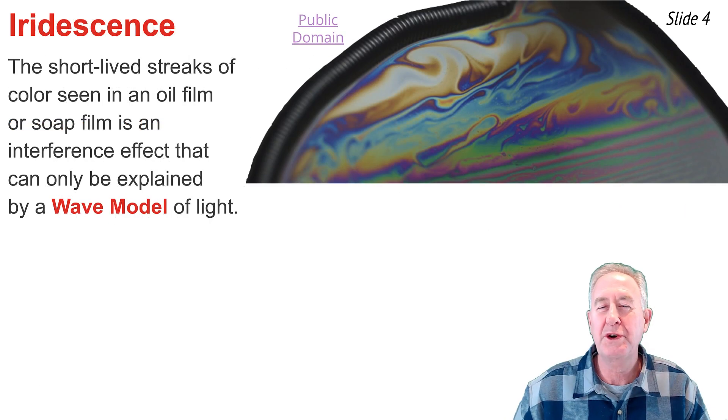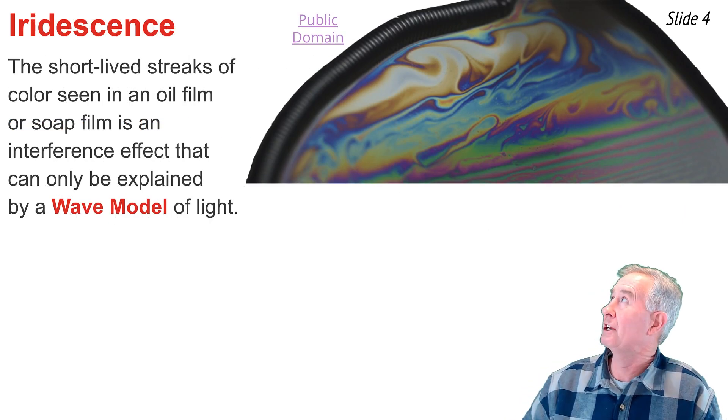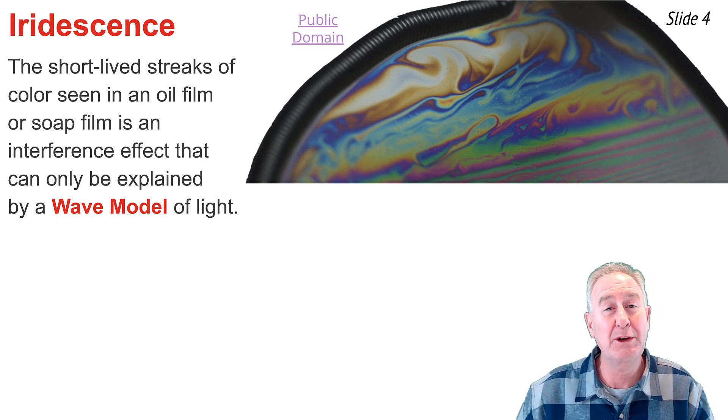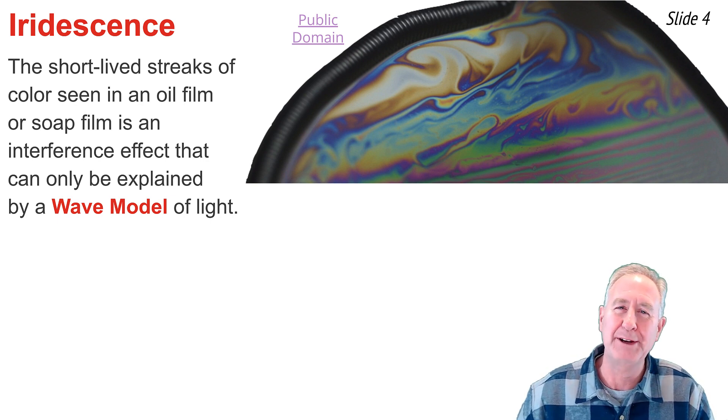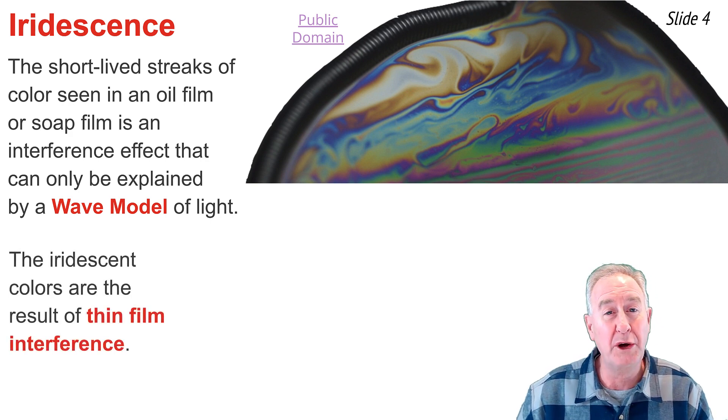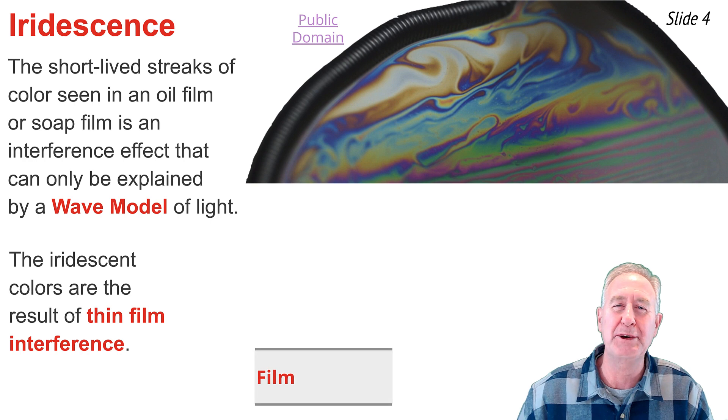The short-lived streaks of colors seen in a soap or oil film are the result of interference. It can only be explained with a wave model of light. These iridescent colors are the result of what we call in physics, thin film interference.